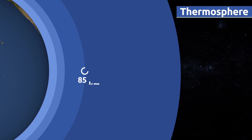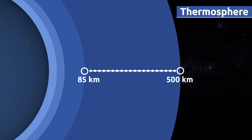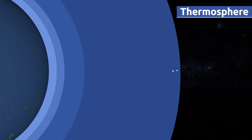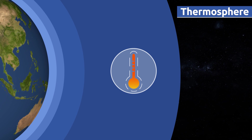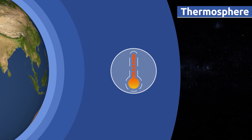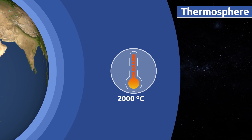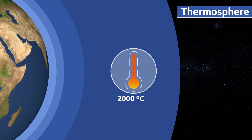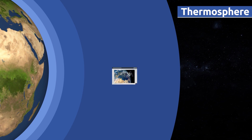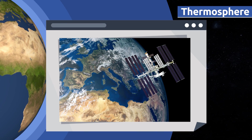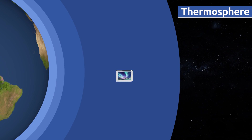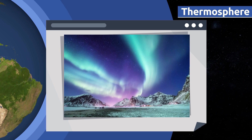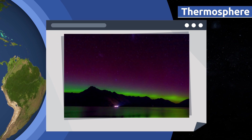The thermosphere extends to an altitude of 85 to 500 kilometers above sea level. This is the warmest of all five layers — temperatures can rise to more than 2,000 degrees Celsius. Air temperature on the surface of the Earth is kept constant thanks to the thermosphere. The International Space Station orbits the Earth within the thermosphere. Impressive natural phenomena like the northern and southern lights also occur in this layer.